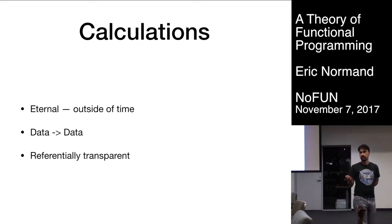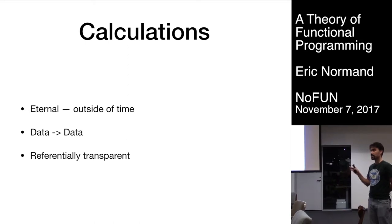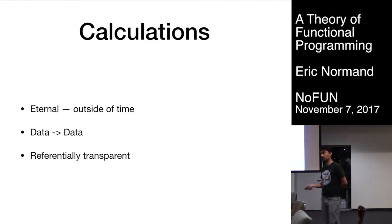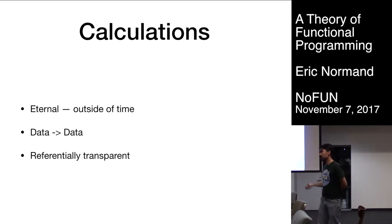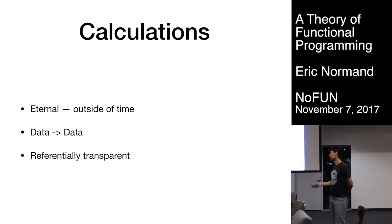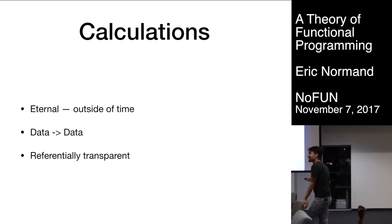Now, calculations. I'm calling them calculations and not functions, because 'functions' is too feature-oriented, and it excludes languages like Java that don't have functions — they have methods. If we said you have to have functions, then we'd have to say you cannot do functional programming in Java, and that's not true. The thing about calculations is they are eternal — whenever you run them, you get the same thing. They're outside of time. You have input data and output data. They're referentially transparent in general, which means you can replace the answer with the expression that calculates it.